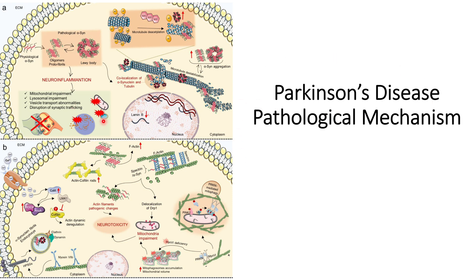Panel B also discusses alpha-synuclein. In this case, alpha-synuclein and spectrin interactions lead to the formation of a spectrin–alpha-synuclein complex. This complex causes pathogenic changes in actin filament structures, affecting the spectrin network and leading to neurotoxicity.